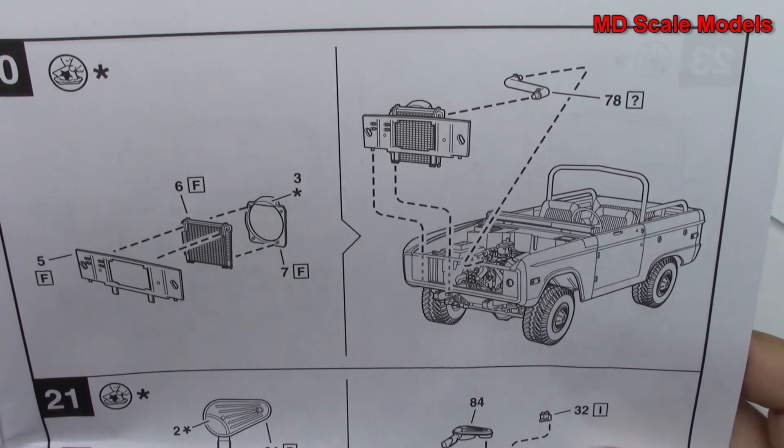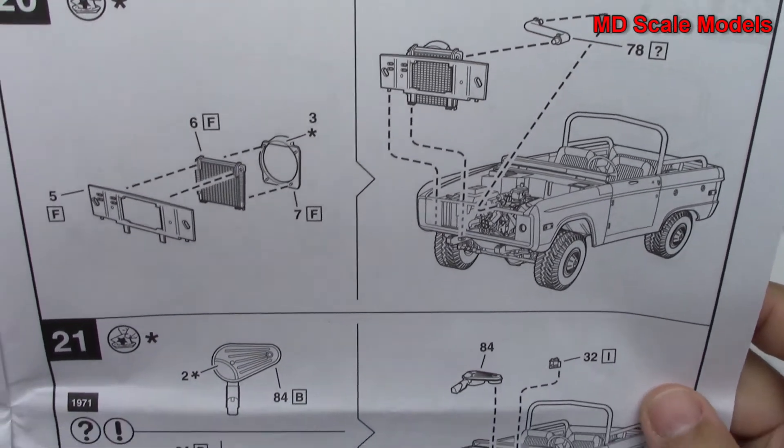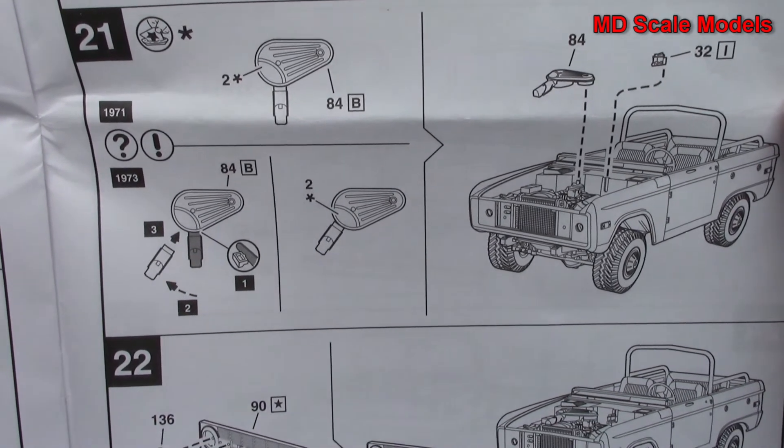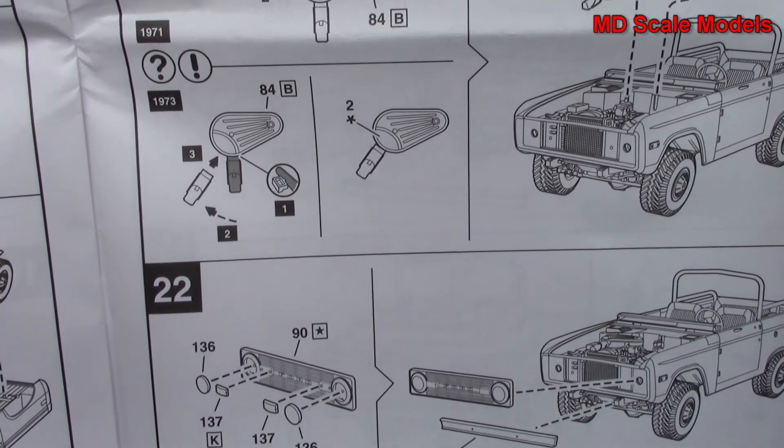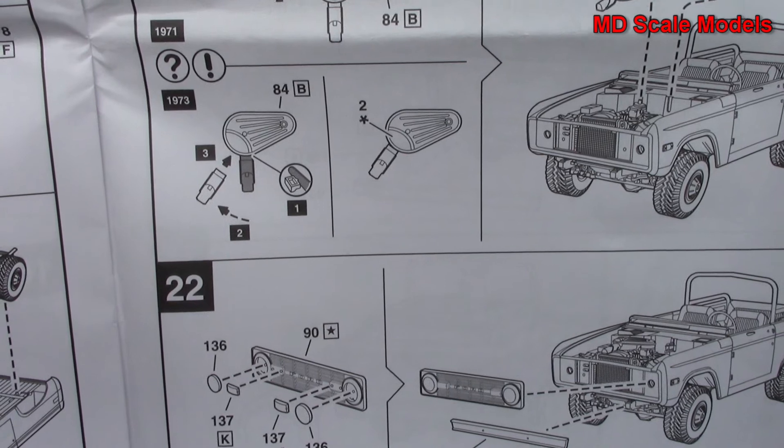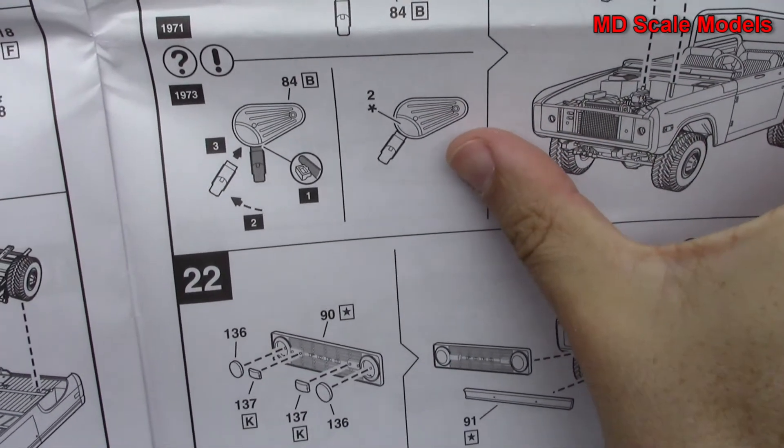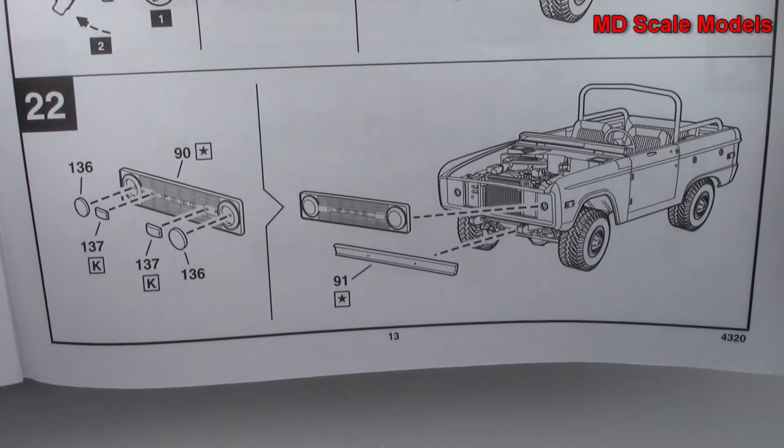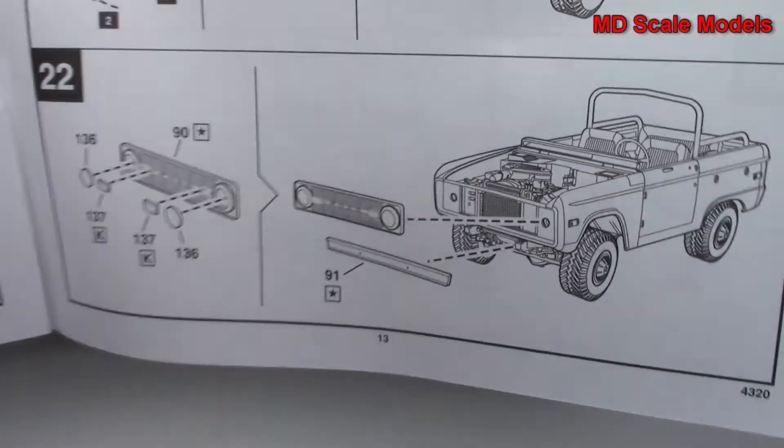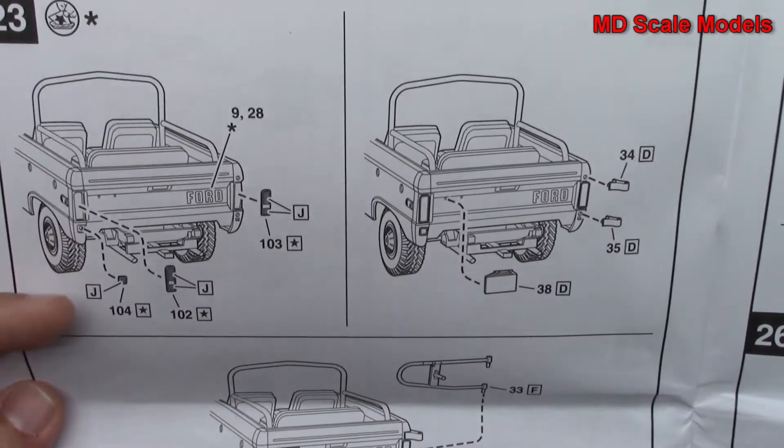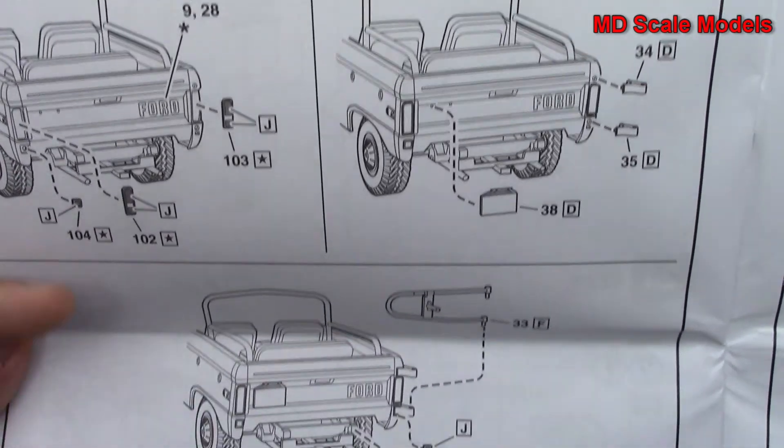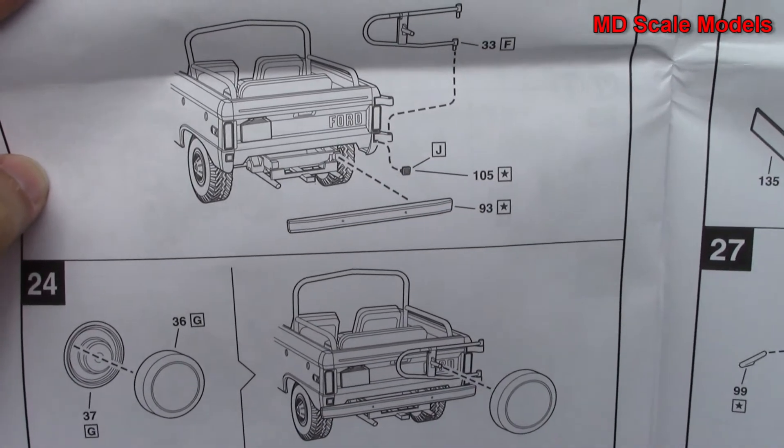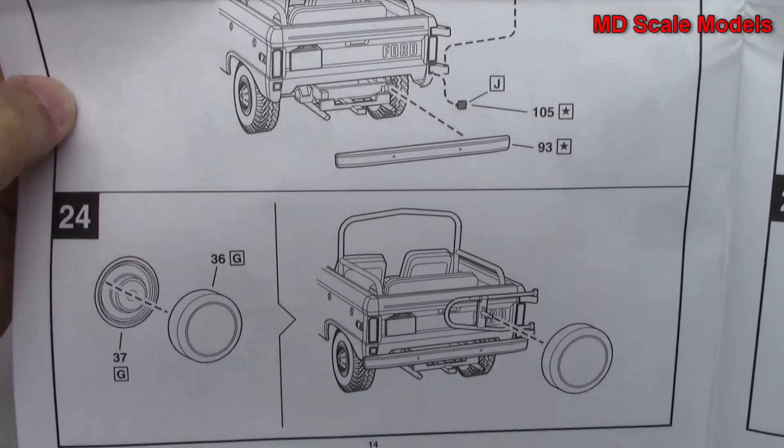We've got our radiator and the air intakes there. Looks like you're supposed to move that. I don't know what that's about, depending on which year you want to build. And front grille and headlights, rear lights. And this looks like this is going to swing open here with our spare tire.